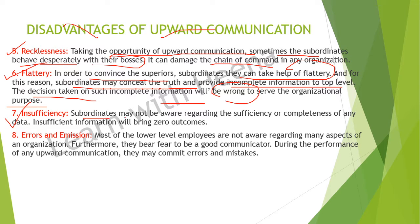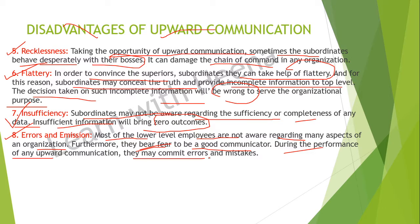The next disadvantage is insufficiency. Subordinates may not be aware of the sufficiency or completeness of data, and insufficient information will bring zero outcome to the organization. Related to this is errors and omissions — most lower level employees are not aware of many aspects of the organization, and they also fear being poor communicators. During upward communication, they may commit errors and mistakes because of this fear and lack of awareness about what is going on in the organization.